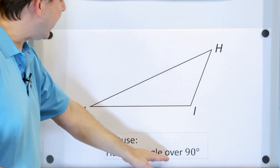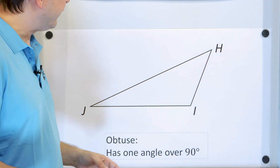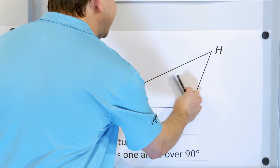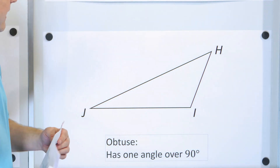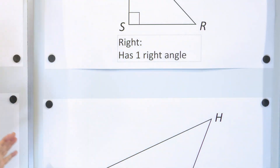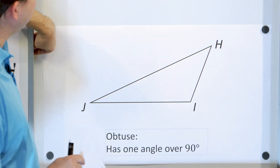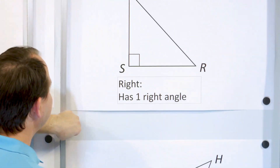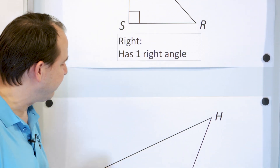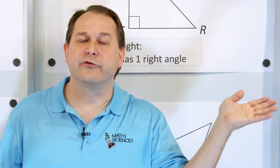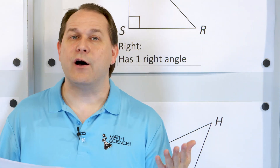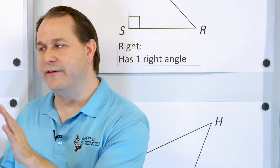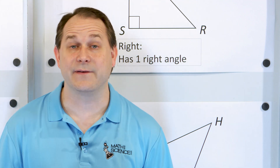Then we have the obtuse triangle, which means one of the angles is bigger than 90 degrees. Think of it as the laid-back triangle — a 90-degree angle would be straight up and down, but this one's bigger than that, so it's kind of a laid-back triangle. We can also combine these names, for example, acute isosceles triangles and so on.